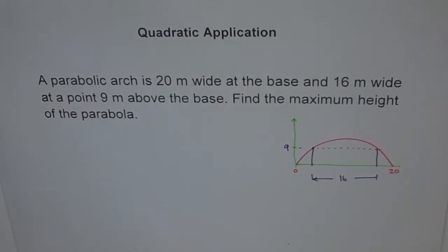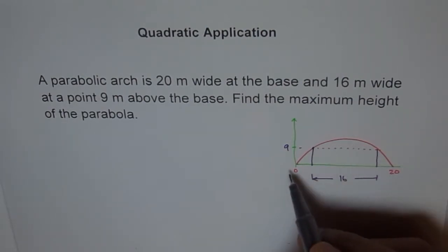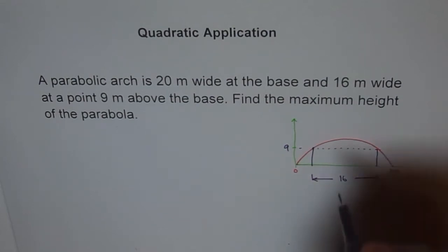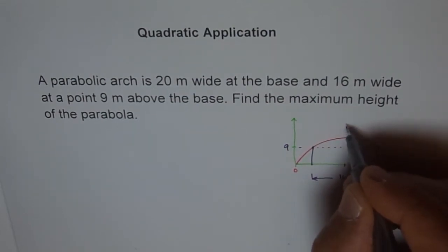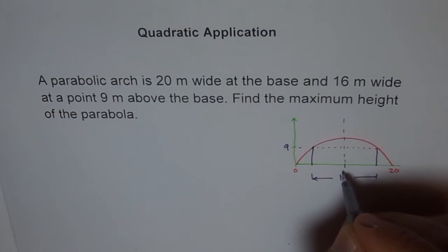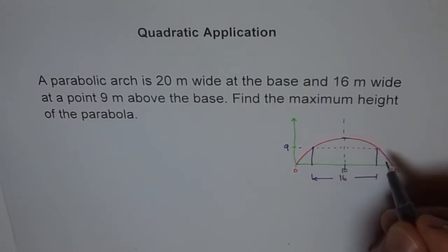So basically it's given to us that the base is 20 meters wide and at a height of 9 meters we have 16 meters of width. Okay, now then let's find the center. So what is the center of this? 10 is the center. Let's say this is our center and we'll draw a line here at the center. This point is 10 for us. Correct? Vertex or the maximum height will be at the center, right?